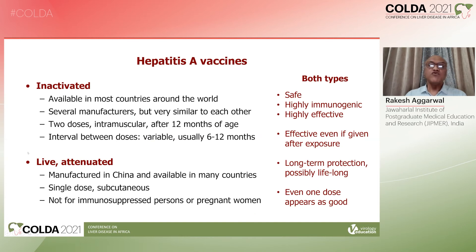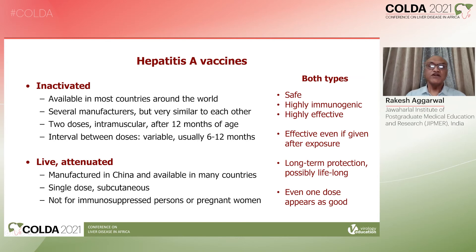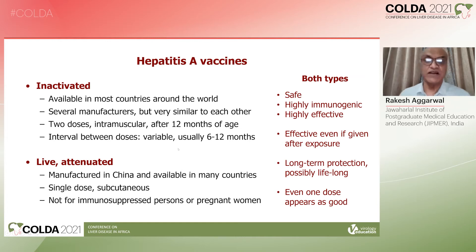Now let's come to vaccines. There are two categories. Inactivated vaccines are made by several manufacturers and are available in most countries around the world. Despite being from different manufacturers, they are very similar to each other. Two doses are needed by intramuscular route and are administered after the first year of life. The interval between doses can be variable but usually six to twelve months is recommended.